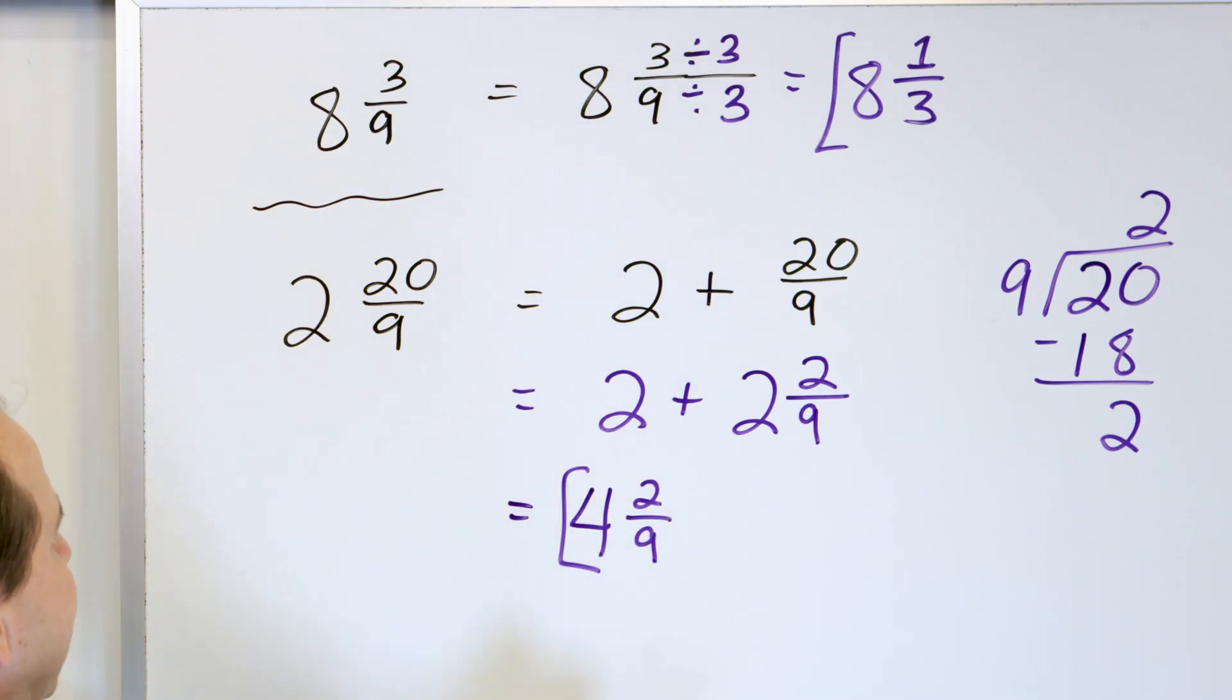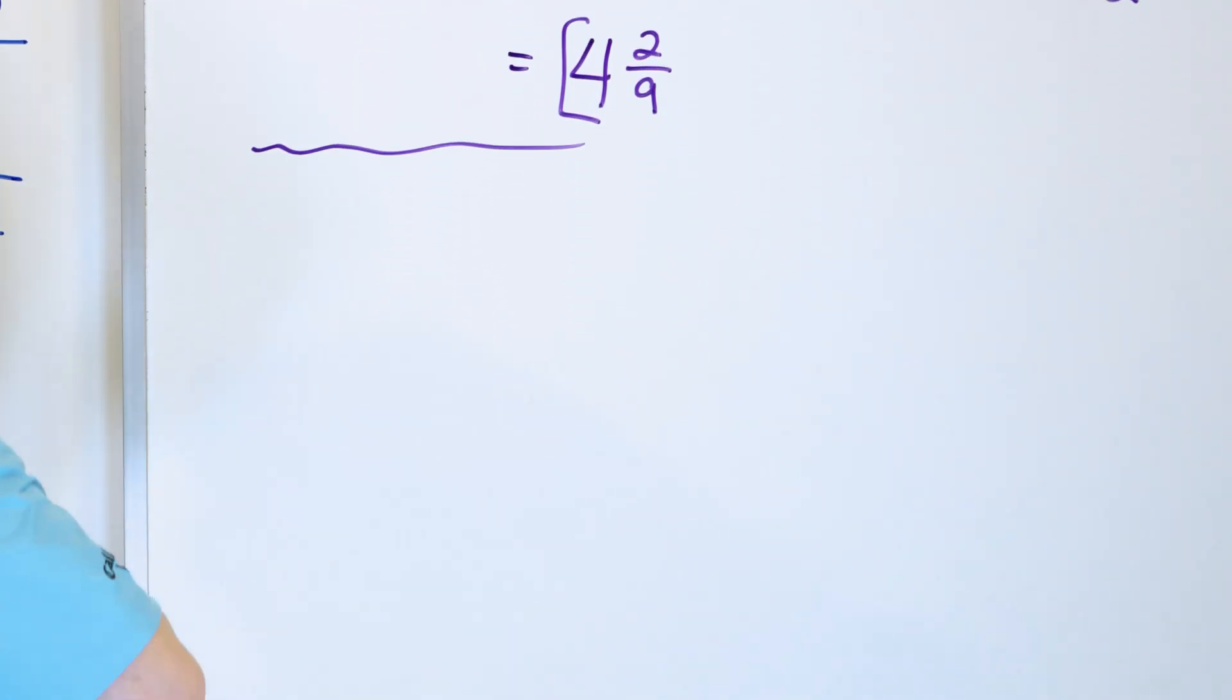So I have 4 and 2/9ths. I cannot simplify the 2/9ths any further. So that is the halfway mark.